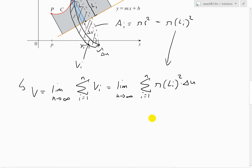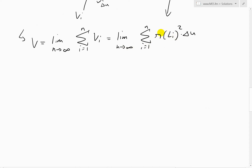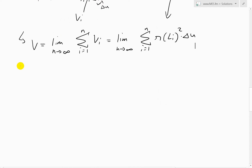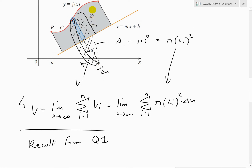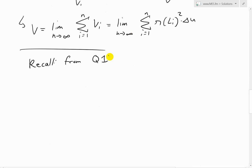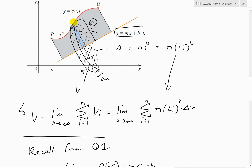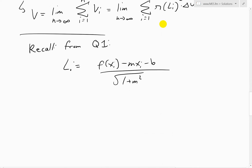We're summing into infinity where n is infinite and the slices are infinitely small. Recalling from question one, I derived l_i to find the region area. I showed that l_i equals (f(x_i) − m·x_i − b) times the square root of (1 + m²), where m and b are from the slant line, and f(x_i) is the function value at point x_i.